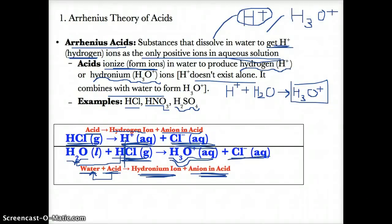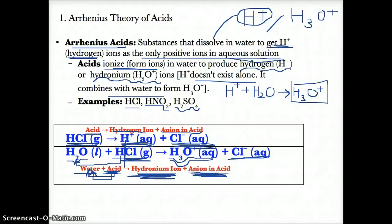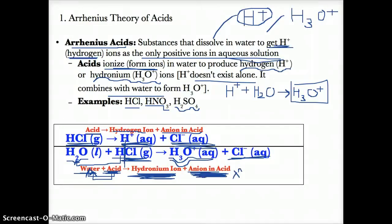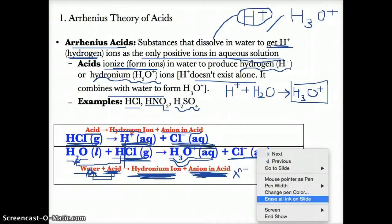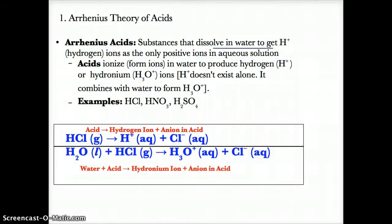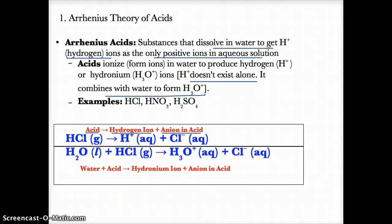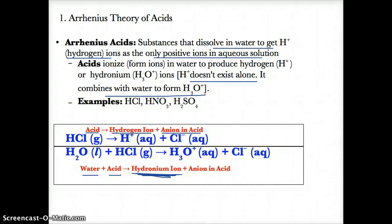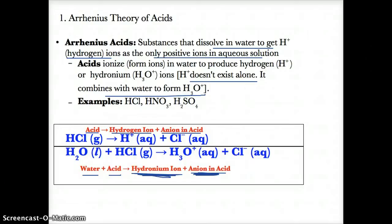The water and acid react together, where the acid donates an H+ to the water. The water gains a proton and becomes H3O+, which is hydronium, and you also get the original negative ion from the acid, written generically as X^N-. That's the whole idea of the Arrhenius theory of acids — they dissolve in water to produce H+ or hydronium as the only positive ions.